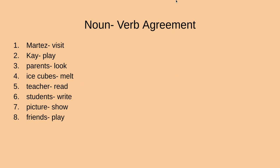Let's go ahead and practice. I'm going to do the first one. Our noun is Martez and our verb is visit. If I were to put Martez and visit in a sentence, it would sound like: Martez visits Kay's house. I added an S to our verb because there's only one Martez. Number two: Kay is our noun, play is our verb. Would it sound okay to say 'Kay play tag' or 'Kay plays tag'? You're right — there's only one Kay, so we add an S to the end of play. Kay plays tag.